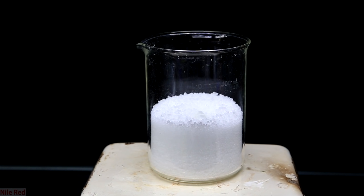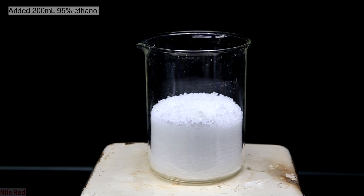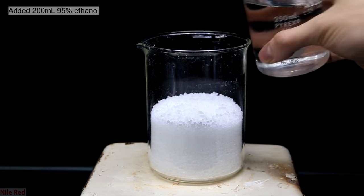However, luckily, most products have been already recrystallized and if you search online, you can probably find the ideal solvent. Online, I found that about one gram of urea dissolves in about one milliliter of boiling 95% ethanol. Given that I have 250 grams, I started out by adding 200 milliliters of 95% ethanol.